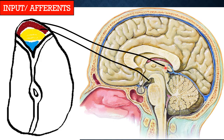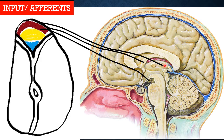The anterior ventral nucleus also receives fibers from the columns of the fornix. So the connections of the anterior ventral nucleus are with the mammillary body, the anterior columns of the fornix, and the habenular nucleus. When it connects with the habenular nucleus, the fibers pass through the stria medullaris thalami.